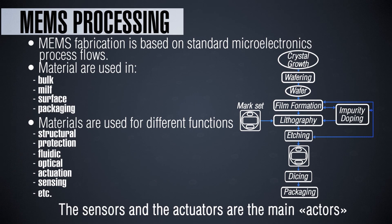Finally, there is the dicing. When you have the wafer with all the devices realized on top of it, you divide the devices into dice — like individual CPUs — and then pack the devices. You place those small pieces of semiconductor on a case, bond the chip by realizing electrical connections through wire bonding or ball bonding, and then close the case to protect your MEMS or chip structure.